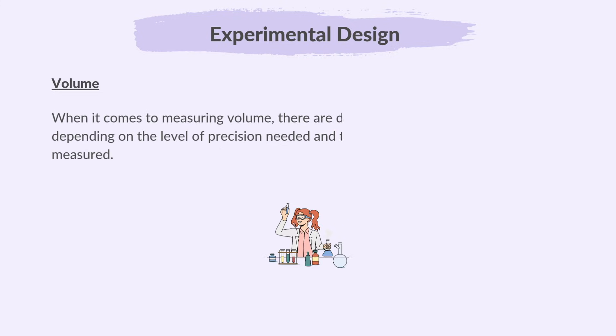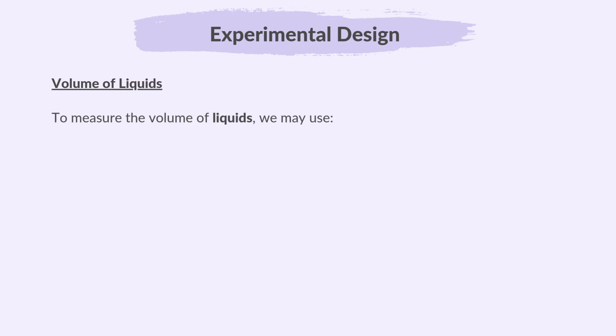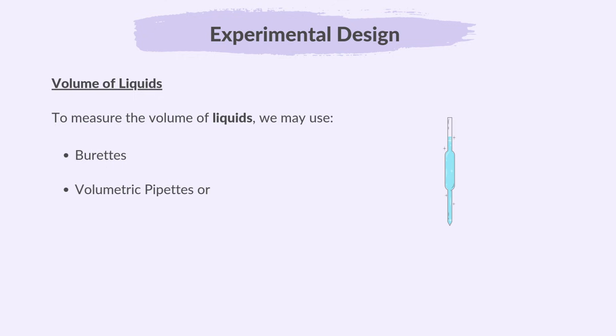When it comes to measuring volume, there are different suitable apparatus depending on the level of precision needed and the type of substance being measured. To measure the volume of liquids, we may use burettes, volumetric pipettes, or measuring cylinders.